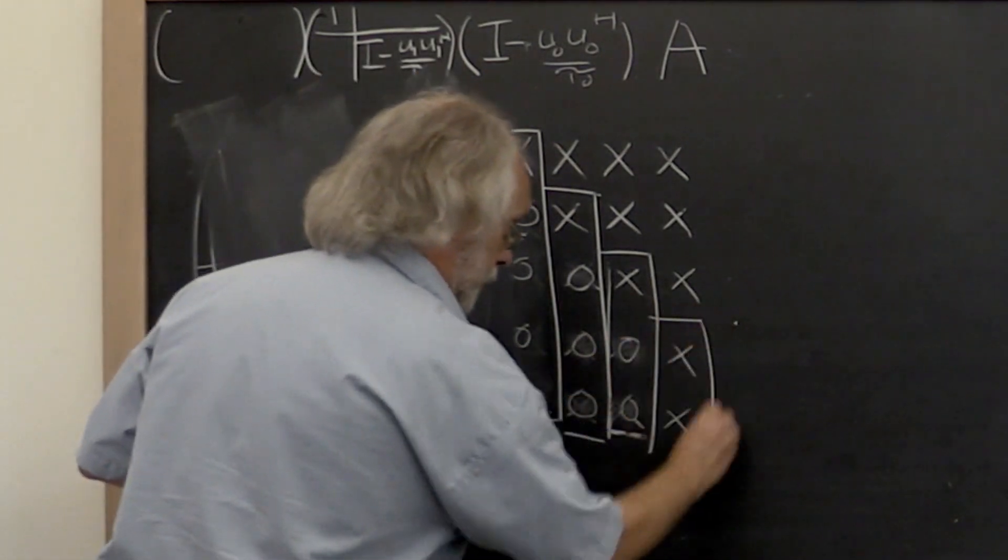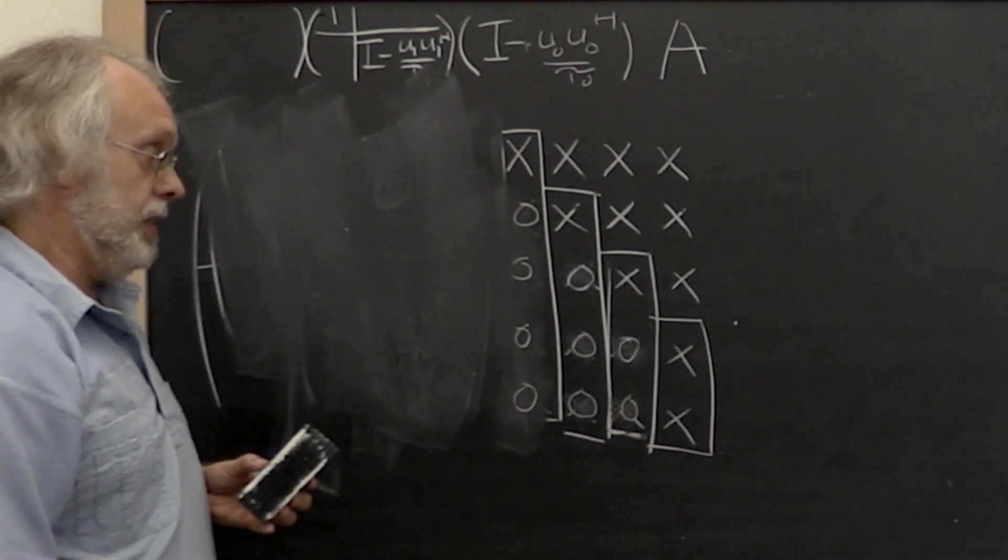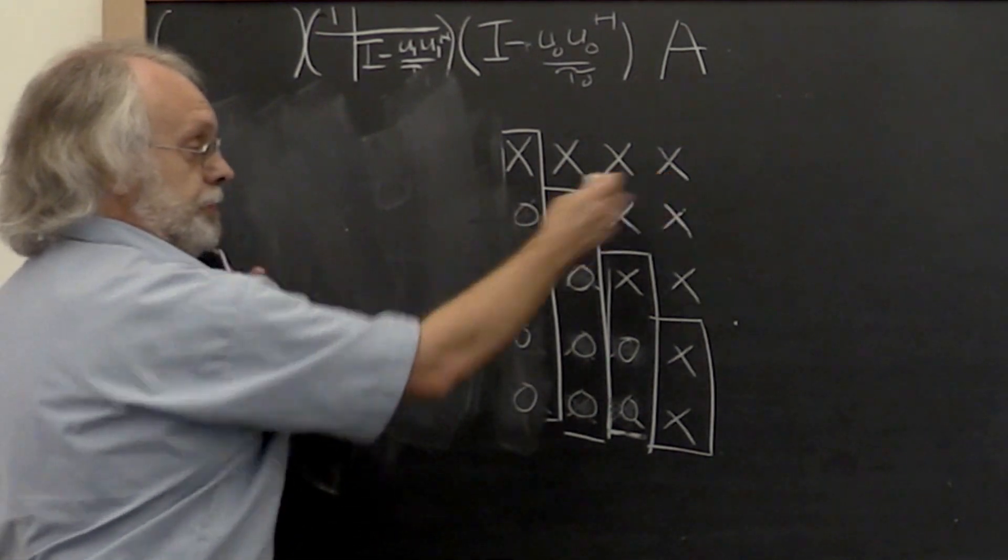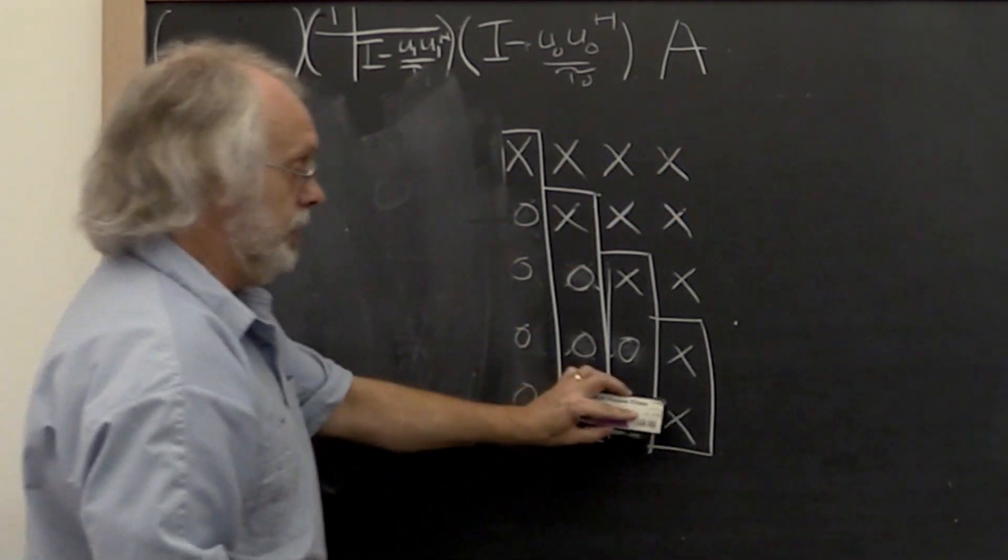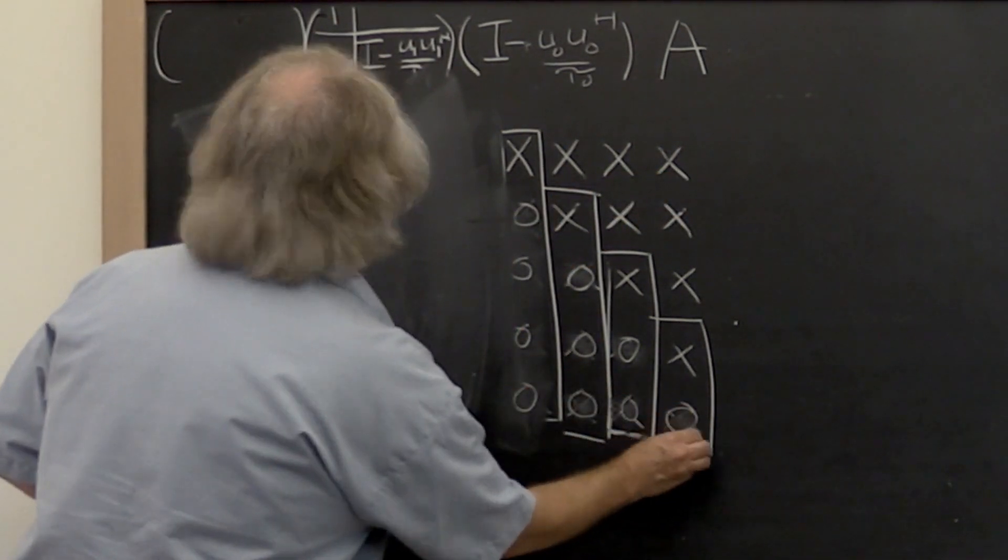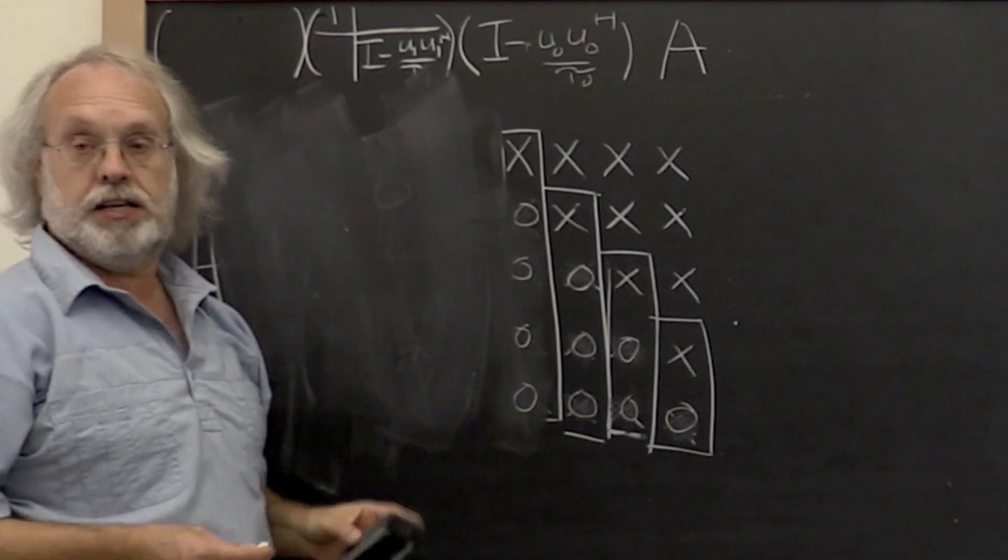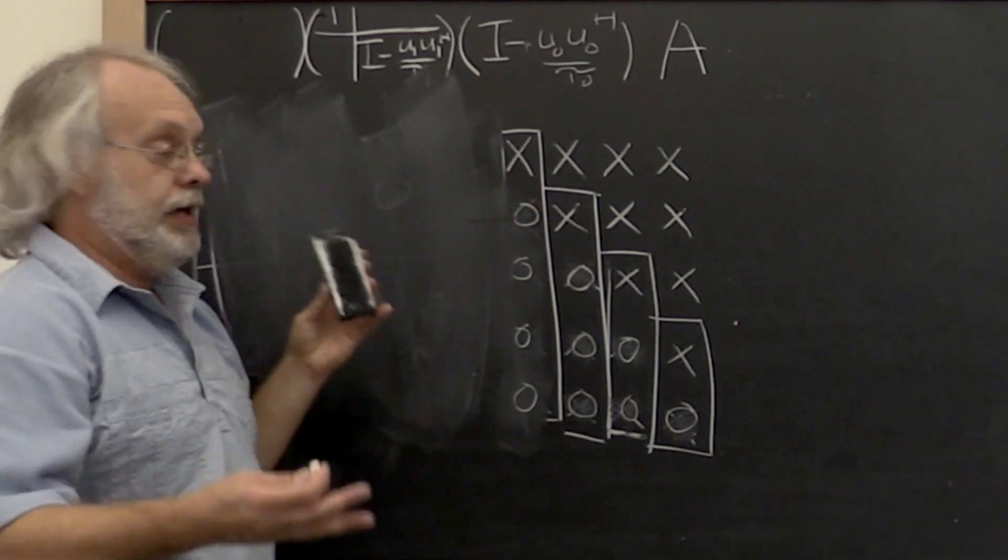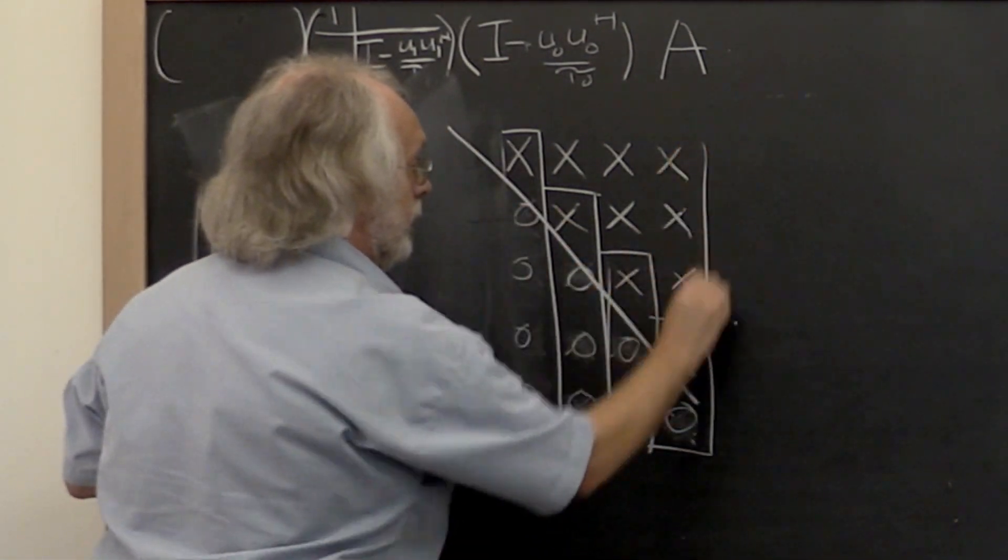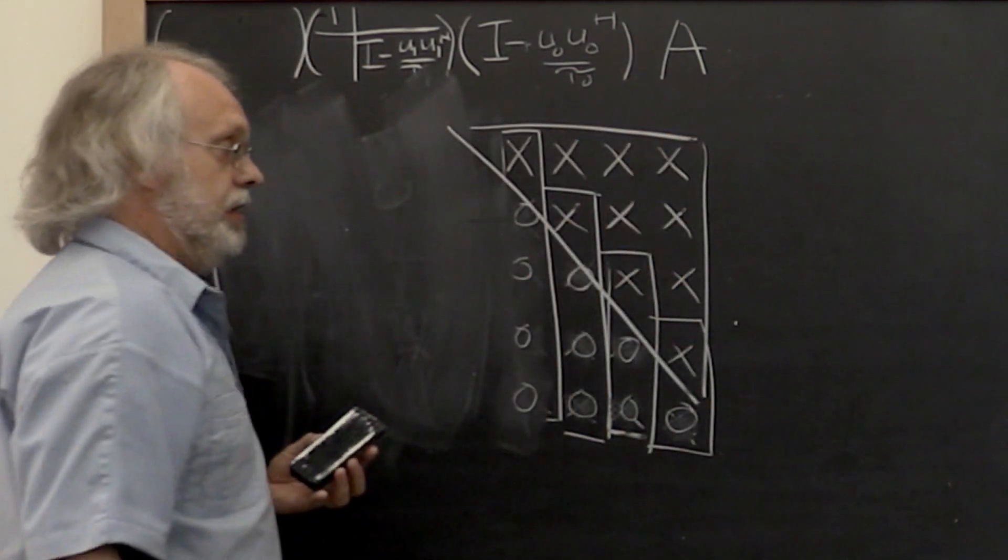And then we compute a Householder transformation from that. We apply it in such a way that the first three rows are left alone. That introduces a zero here. It would mean another Householder transformation that applies to A. And then we're left with an upper triangular matrix right here.